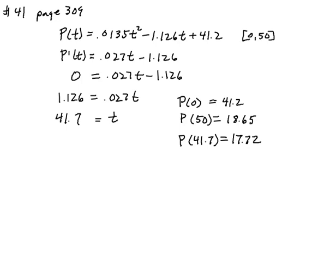So we're looking for an absolute minimum. The absolute minimum of 17.72% occurs at t equal to 41.5. So t of 0 is the same thing as 1950, so t equal to 41.7 is 1991.7. In other words, all the way through 1991 or 1991 and 7 tenths of a year.